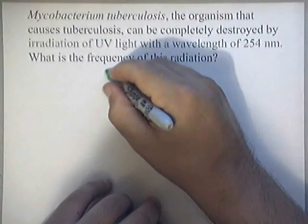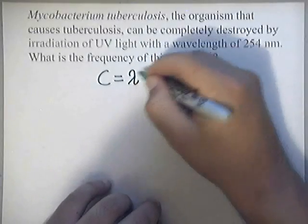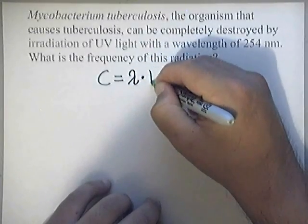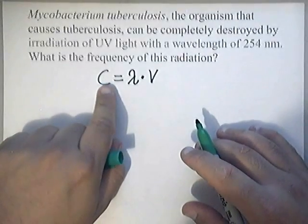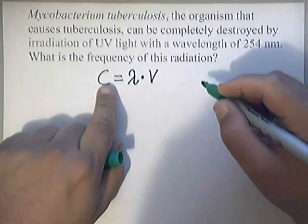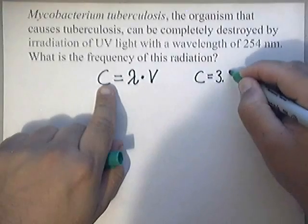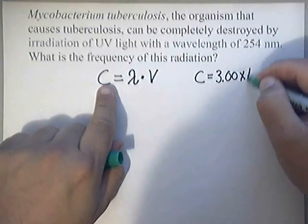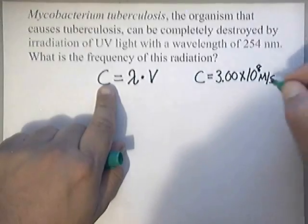This equation is C equals lambda times V. C is a constant. It's the speed of light. Now, that constant that I want my students to use is C equals 3.00 times 10 to the eighth meters per second. That is the speed of light.